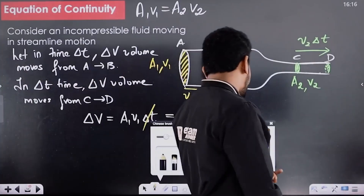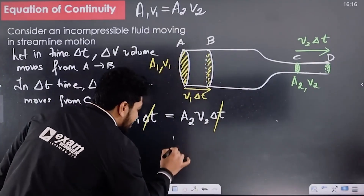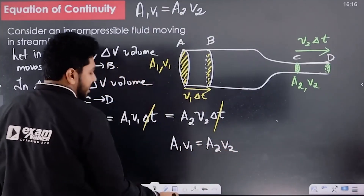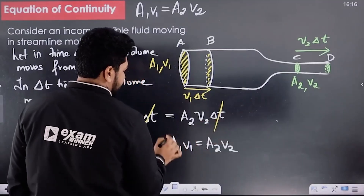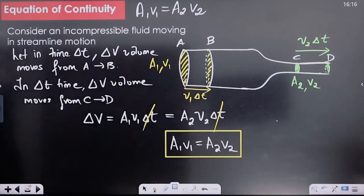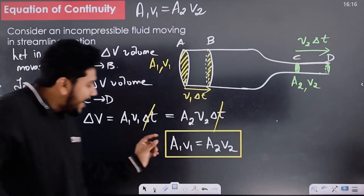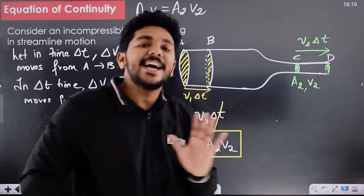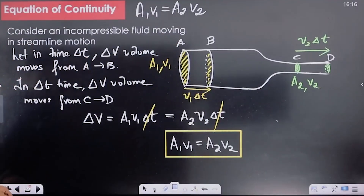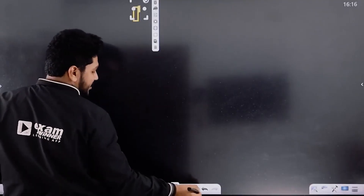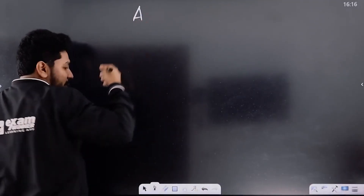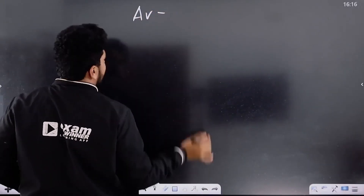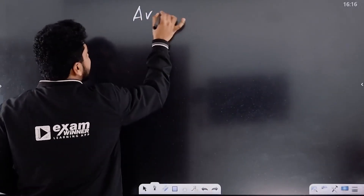Then A1 equals A2, giving us the Equation of Continuity: A1V1 is equal to A2V2. This is called the Equation of Continuity. Area into velocity will always be constant for any ideal fluid flowing.